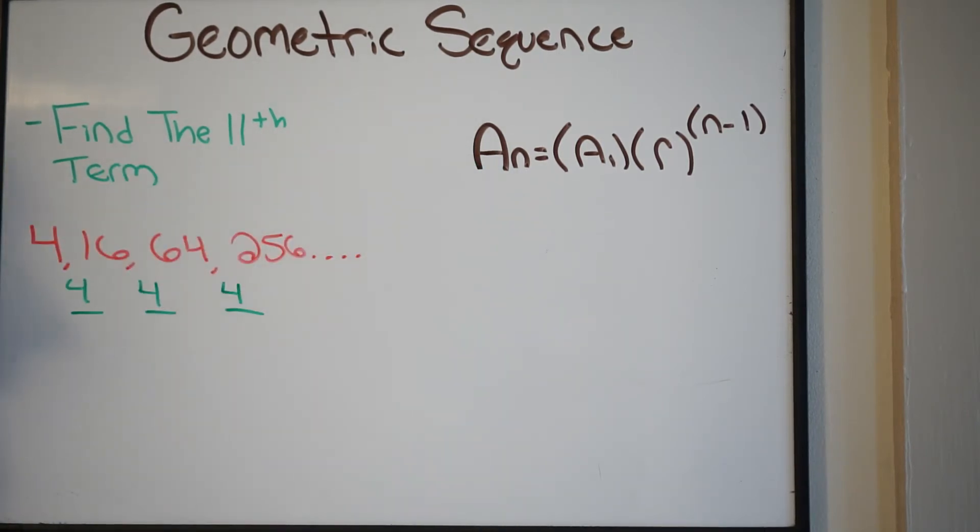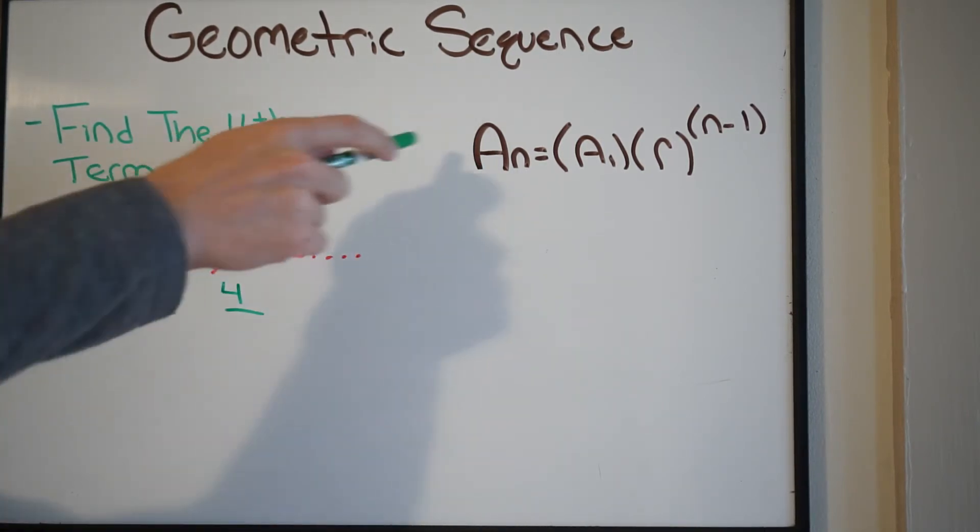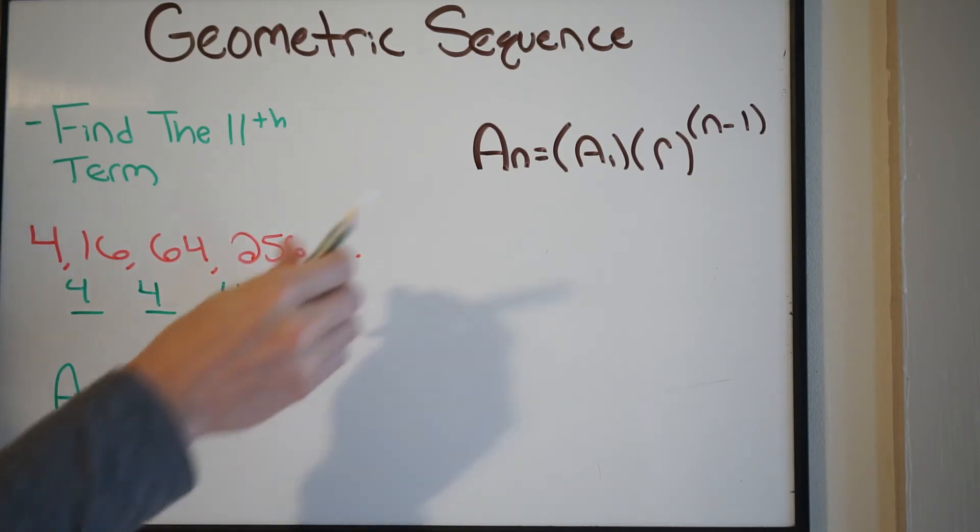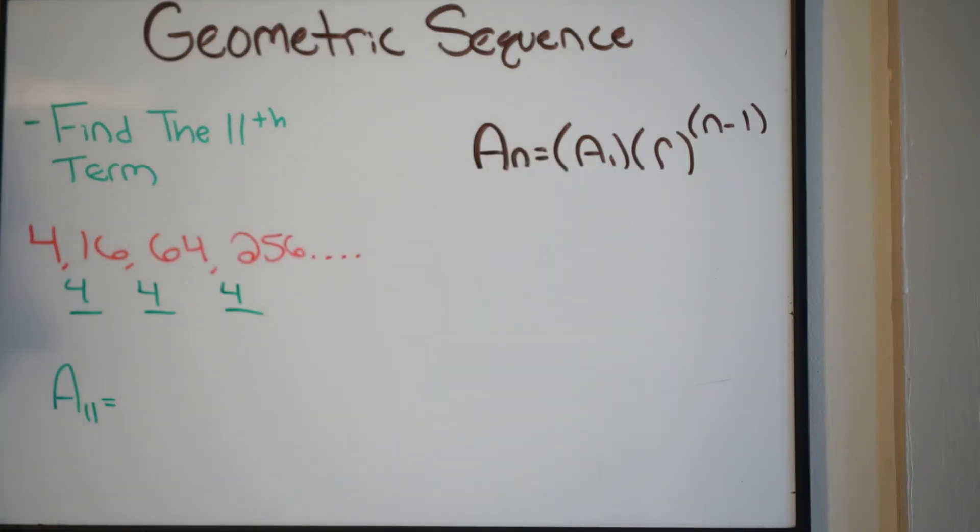So again, we're trying to find the 11th term. Using our equation, we're going to say A of 11, because we're trying to find the 11th term. A of 1 is going to be our first term of the sequence. So in this case, it's going to be 4.